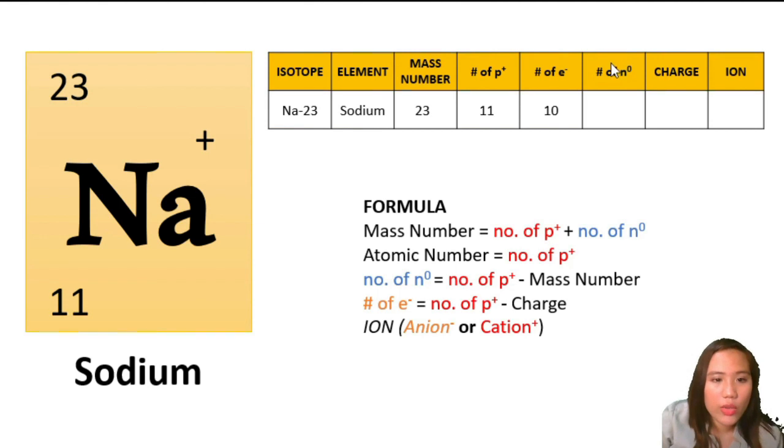How do we get the neutrons? For neutrons, we need to subtract the protons from the mass number. In this case, we already have mass number and protons, so 23 minus 11, we have 12.